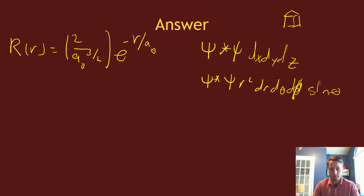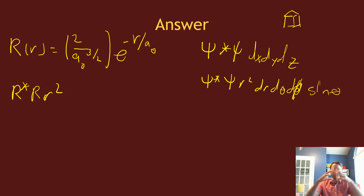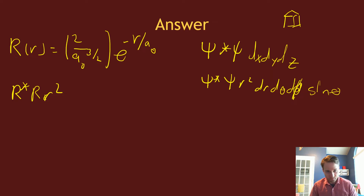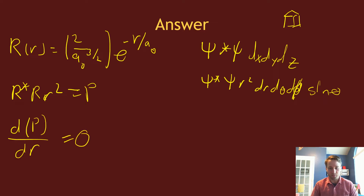Here we care only about the radial part, so we look at the radial distribution function, which is related to R*R · r². That is our probability distribution away from the nucleus. The most probable location is found by taking the derivative of this probability P with respect to r.